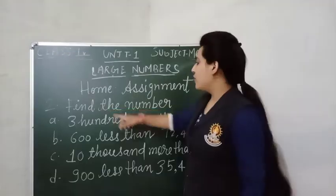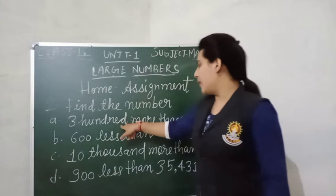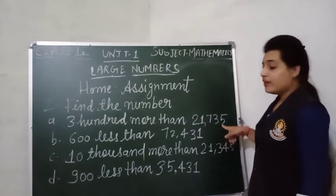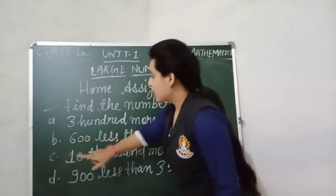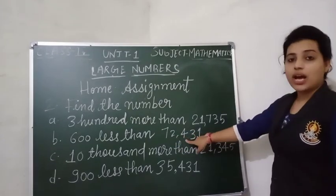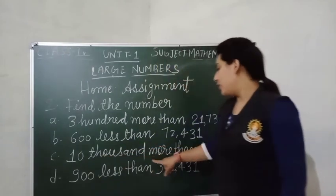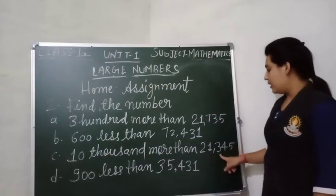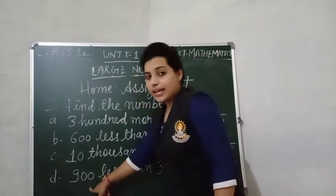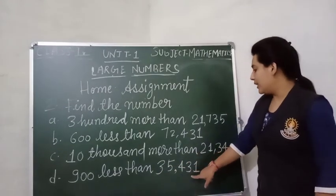Question 2: find the number. A: 300 more than 21,735. B: 600 less than 72,431. C: 10,000 more than 21,345. And D: 900 less than 35,431.